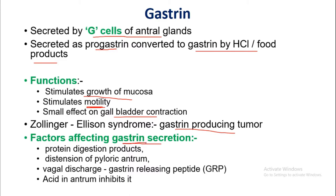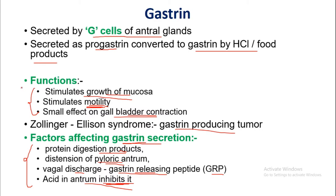Factors affecting gastrin secretion: protein digestion products, distension of the pyloric antrum, vagal discharge or release of gastric-releasing peptide, and acid in the antrum which inhibits gastric secretion. Functions of gastrin: stimulates growth of the mucosa, stimulates gastric motility, and small effect on gallbladder contraction.